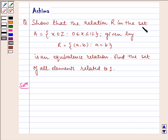Show that the relation R in the set A equals x belongs to Z such that 0 is less than or equal to x is less than or equal to 12, given by R equals (a,b) such that a equals b, is an equivalence relation.